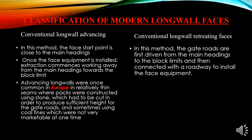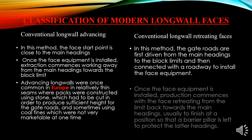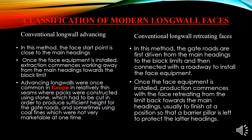In the retreating method, first the gate roads are driven from the main heading to the block limit and then connected with roadways to install the face equipment. Once the face equipment is installed, production commences with the face retreating from the limit back toward the main heading, usually finishing at a position so that a barrier pillar is left to protect the lateral heading.